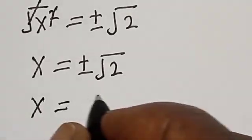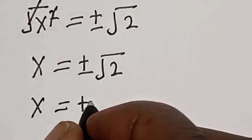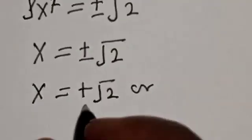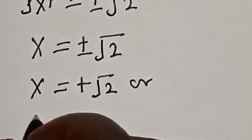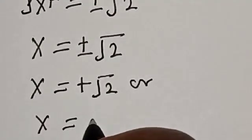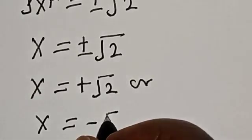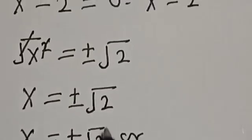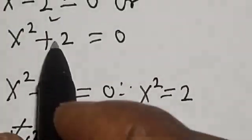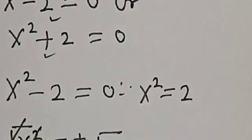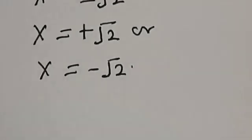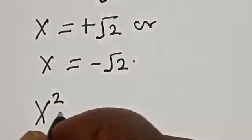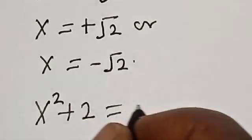So x is equal to positive root 2 or x is equal to negative root 2. Also, for the second case: x squared plus 2 is equal to 0.